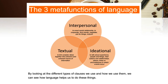To better understand Systemic Functional Linguistics, let us explore the three metafunctions of language. These metafunctions include textual, interpersonal, and ideational. Textual means to link complex ideas together into cohesive and coherent waves of information. Interpersonal means to enact social relationships — to cooperate, form bonds, negotiate, ask for things, or to instruct. Ideational means to talk about experiences, people and things, their actions and relationships, places, times, or circumstances in which events occur.